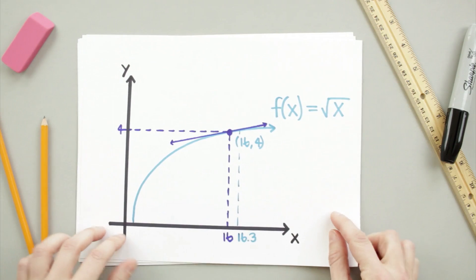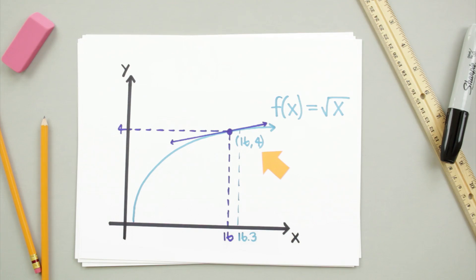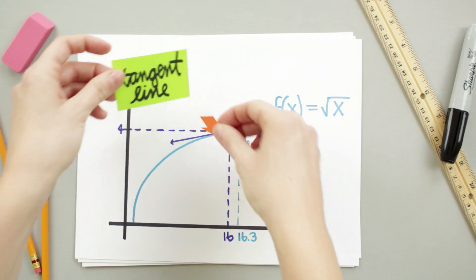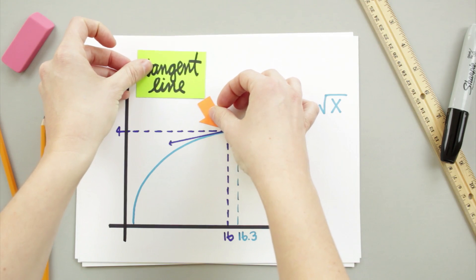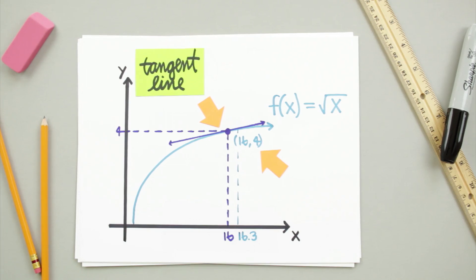If we take a look at the graph of the function f(x) equals the square root of x, we can mark the point here with coordinates 16, 4. We know the square root of 16.3 is going to be nearby, so what we can do is draw a tangent line to the graph at the point we do know, and then use the equation of that line in order to find a y value for x equals 16.3.